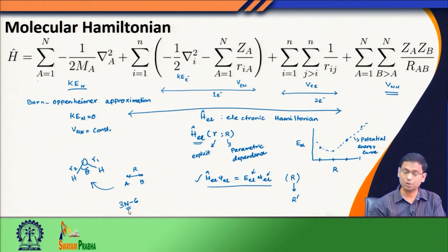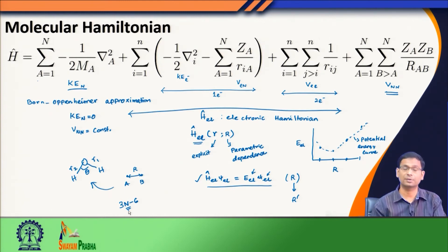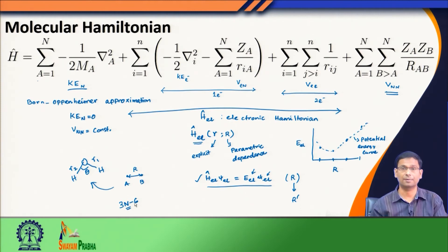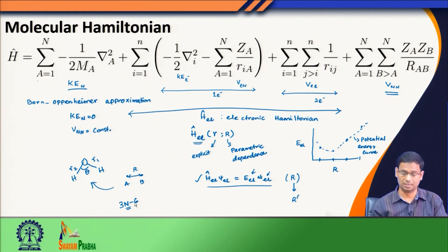The potential energy surface is a multidimensional surface. For example, if you take a molecule with 10 atoms, this will become 3×10 − 6 = 24. So this potential energy surface is actually 24-dimensional. We cannot of course visualize anything with that high a dimension, so we can take slices of the potential energy surface and then visualize them.